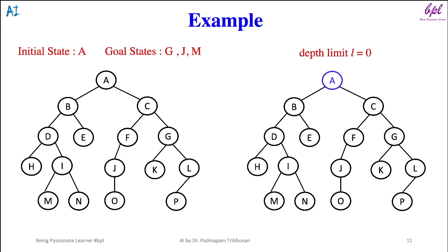A is not a goal state, so the next iteration will start. In the second iteration, L equals one, so the tree will be explored till level one. First node A is visited, then node B, then node T. It is considered that D has no successors, then E will be visited, then node C will be visited, then F will be visited and it is considered that F has no successors as it is at level two.